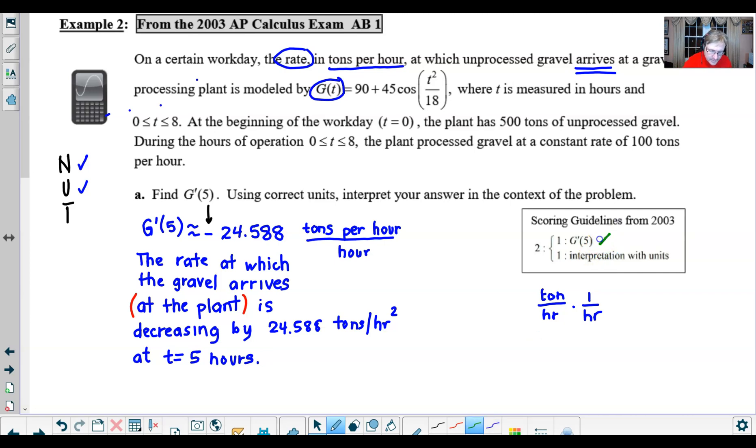And that would give you full credit. You would have earned the first point over here on the rubric box for computing the g'(5) correctly, and then the interpretation with the units would earn the second point.